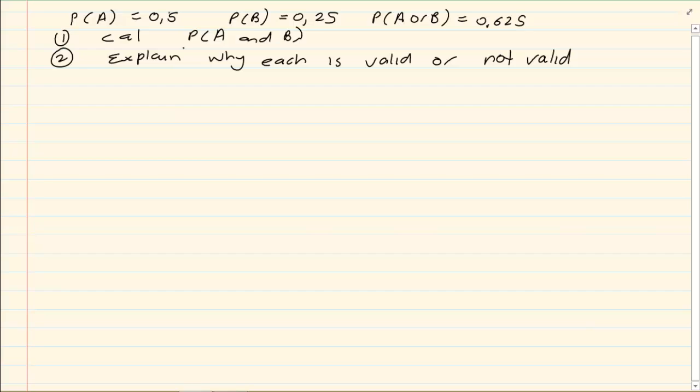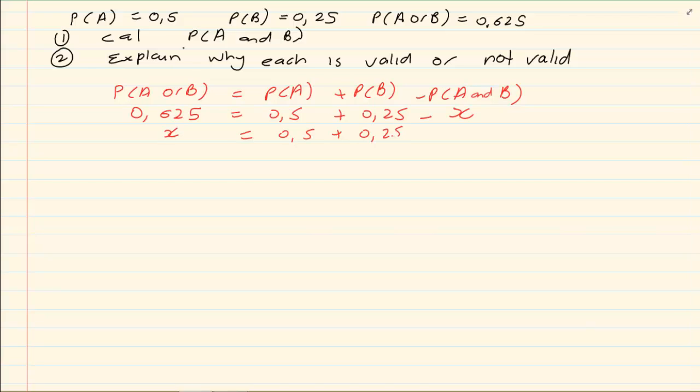They are telling us that P of A is equal to 0.5, P of B is equal to 0.25, and P of A or B is equal to 0.625. Now if I want P of A and B, I know the formula says P of A or B is equal to P of A plus P of B minus P of A and B. So I have 0.5 plus 0.25 minus my unknown is equal to 0.625. My X is going to equal to 0.5 plus 0.25 minus 0.625, which means my X is equal to 0.125.